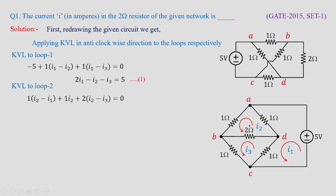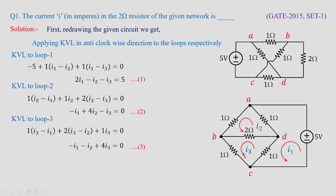Applying KVL to Loop 2: this loop shares 1 ohm, 2 ohm, and 1 ohm resistors. Going anti-clockwise, the 1 ohm shared by I2 and I1 gives (I2 − I1), plus 1(I2), plus 2(I2 − I3) equal to 0. Reframing: −I1 + 4I2 − I3 = 0. This is the second loop equation. Similarly, applying KVL to Loop 3: −I1 − I2 + 4I3 = 0.